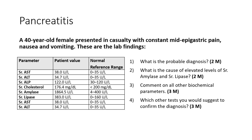Third question: comment on all other biochemical parameters. Liver enzymes and cholesterol are marginally raised. Are they significant? It may be, because the pancreas and hepatobiliary system are adjacent. Sometimes obstruction of the bile canaliculi, bile duct, or common bile duct co-exists with pancreatic pathology. So liver function test and pancreatic function test are done together.